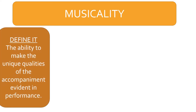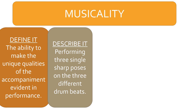So make sure you've written the definition down. A simple example: imagine three unique drum beats one after the other, and you would perform a different pose on each of the three drum beats. The key is that you're making the unique qualities of the music - the layers, the notes - evident through your body. You can transform the music into your body to make it evident. It might be easier to understand musicality once we choreograph something together in the studio.